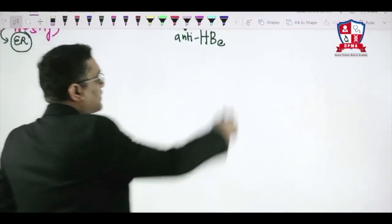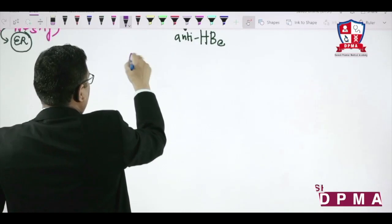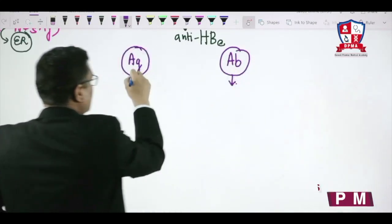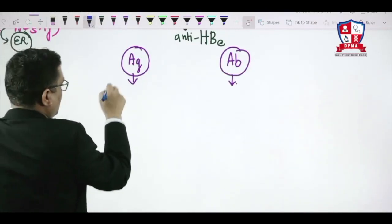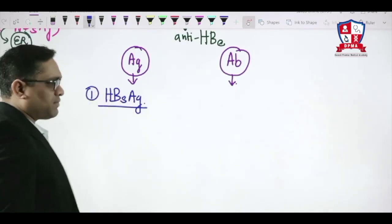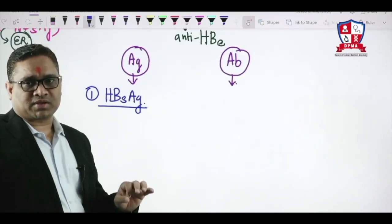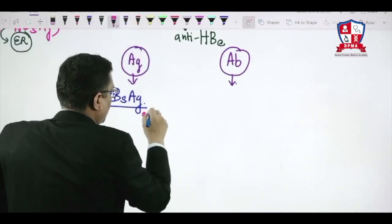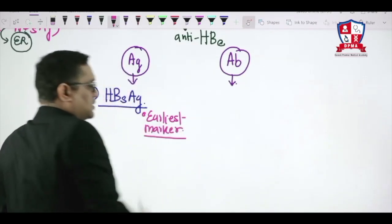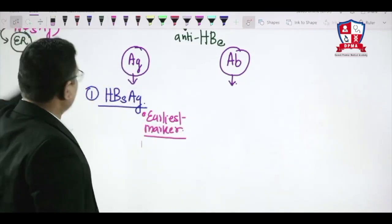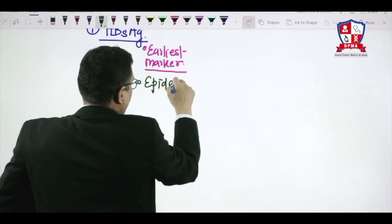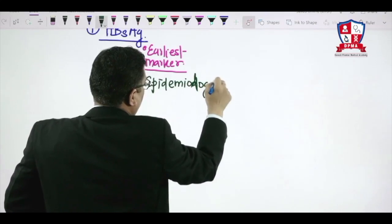We are going to see the significance of these serologies. On one side I will be writing about the antigen, and on the other side about the antibodies and their significance. Whenever we see hepatitis B virus, HBsAg will be the first antigen to appear in inflammation — it is the earliest marker and also the epidemiological marker of hepatitis B infection.